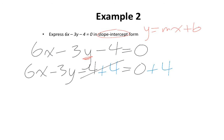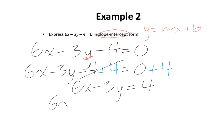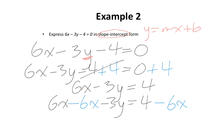Negative 4 plus 4 cancels out, which leaves me with just 6x minus 3y equals 0 plus 4, which simplifies to just 4. Next, I'm going to move the term 6x to the other side of the equation, which means I'm going to have to subtract 6x from both sides. 6x subtract 6x cancels out, which leaves me with just negative 3y on the left and 4 minus 6x on the right.